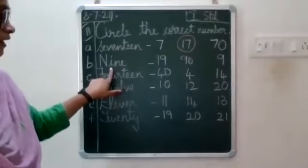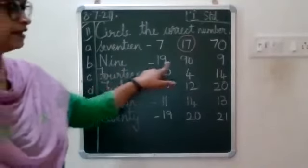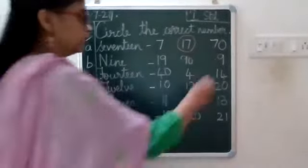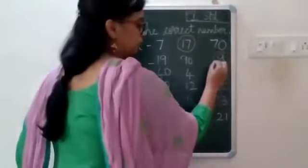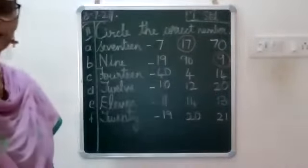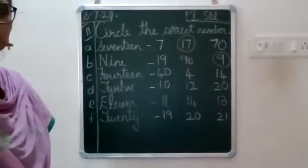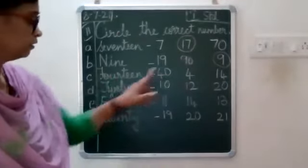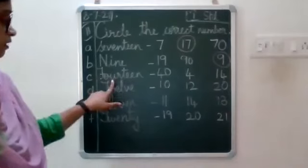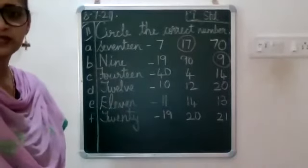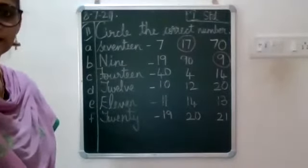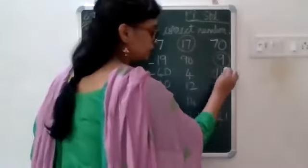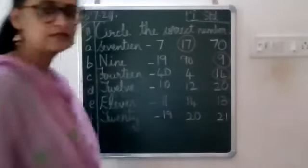Now second one — 9, where is 9 in this second line? Very good — now circle 9. Very good Abhinaya. Now next third one — 14, where is 14? Very good — third number is 14, circle 14.